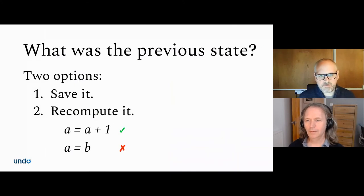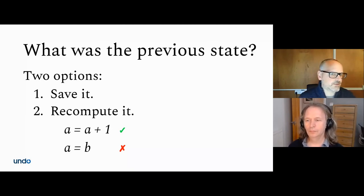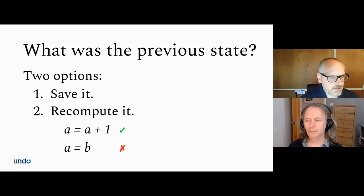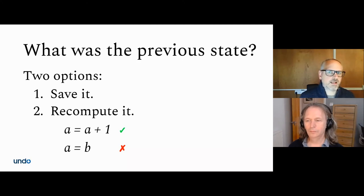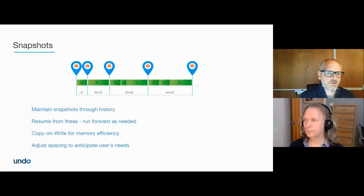We can exploit determinism: if I've just executed the 1000th instruction and want to know the state before the 999th, I can go back to the start and play forward 999 instructions. That's how you can make it work, because the amount of non-deterministic behavior is a tiny minority of what the computer does and we can capture it. We don't want to go all the way back to the beginning — we want to use snapshots.